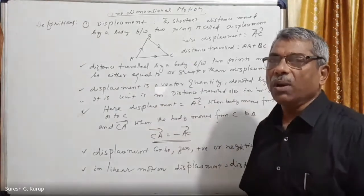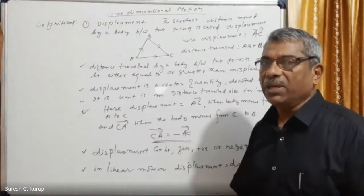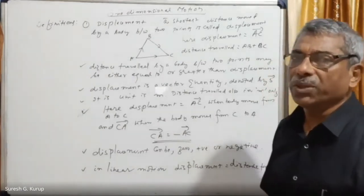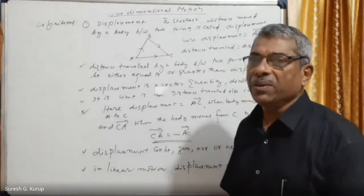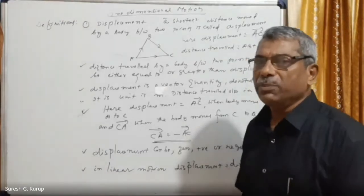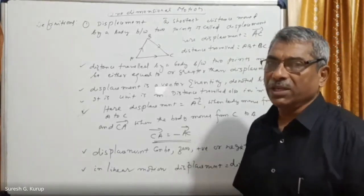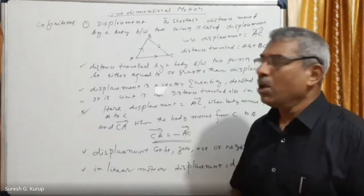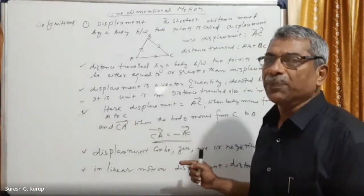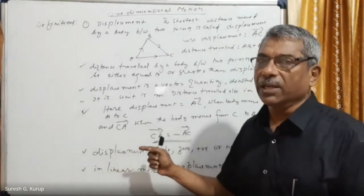Distance traveled cannot be zero, but displacement can be zero, positive, or negative. Distance traveled is always a positive quantity — there is no negative distance traveled. Displacement can be positive, negative, or zero because it is a vector quantity. If the body travels along the x-axis from the origin, displacement is increasing.